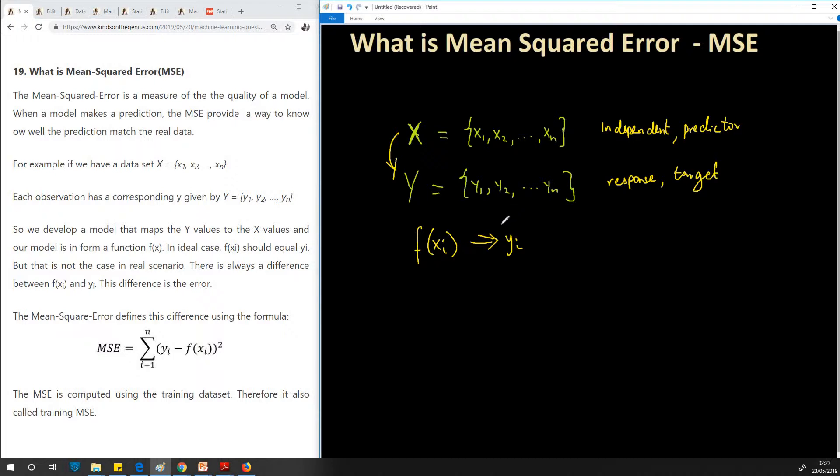Now in the ideal case, f(x_i) should map to y_i, but this is not the case in real scenarios. Once we have this model based on this dataset, there's always a difference between f(x_i) and y_i. So I'm going to put a hat on it and leave this one without a hat.